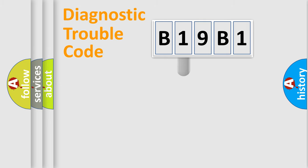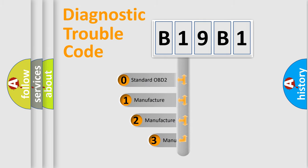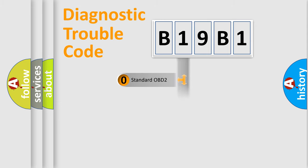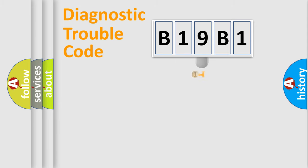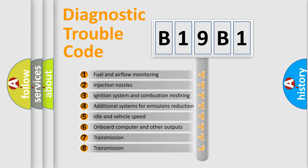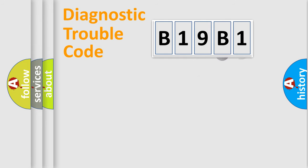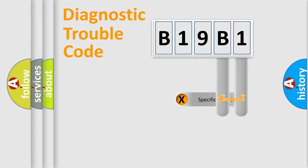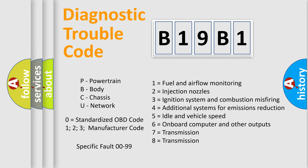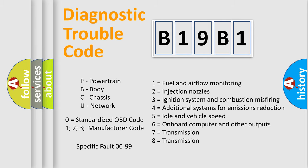This distribution is defined in the first character of the code. If the second character is expressed as zero, it is a standardized error. In the case of numbers 1, 2, or 3, it is a manufacturer-specific error expression. The third character specifies a subset of errors. This distribution is valid only for the standardized DTC code, and only the last two characters define the specific fault of the group. Remember, such a division is valid only if the second character is expressed by the number zero.